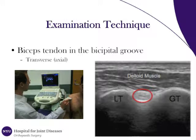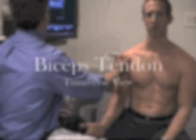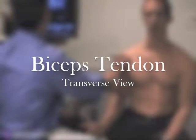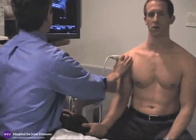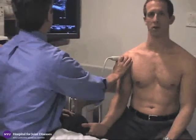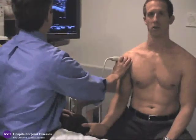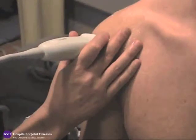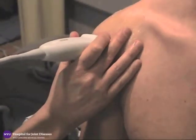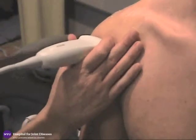This video will demonstrate imaging the biceps tendon in the transverse plane. The patient is seated with the arm at their side, the elbow flexed, and forearm supinated. The examiner positions the probe at the level of the bicipital groove.